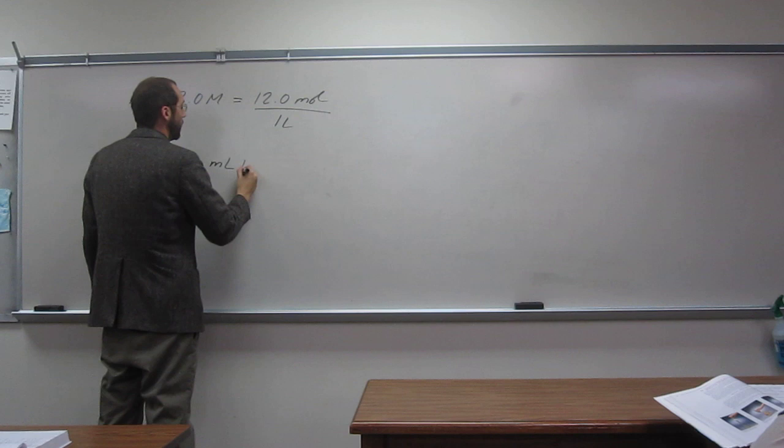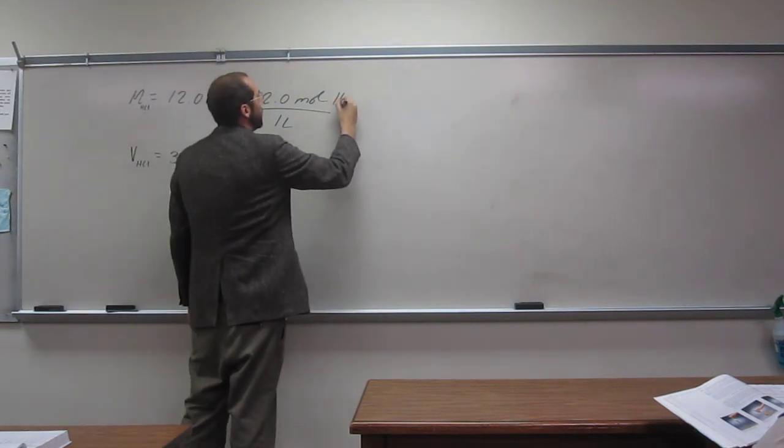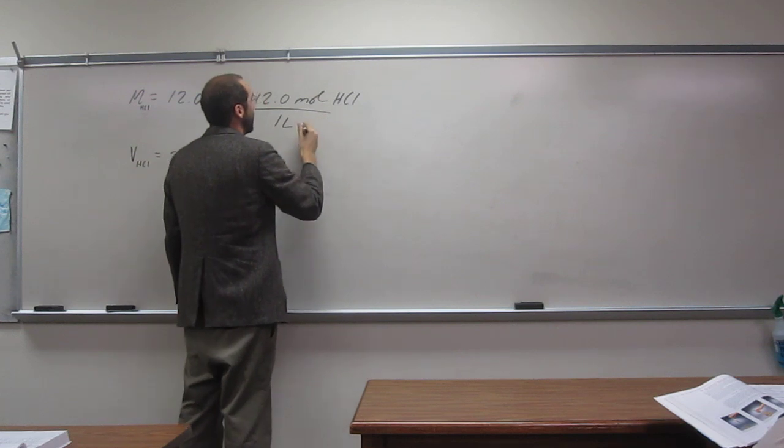So we have 300 milliliters of HCl, and for every 12 moles of HCl, we have one liter of solution.